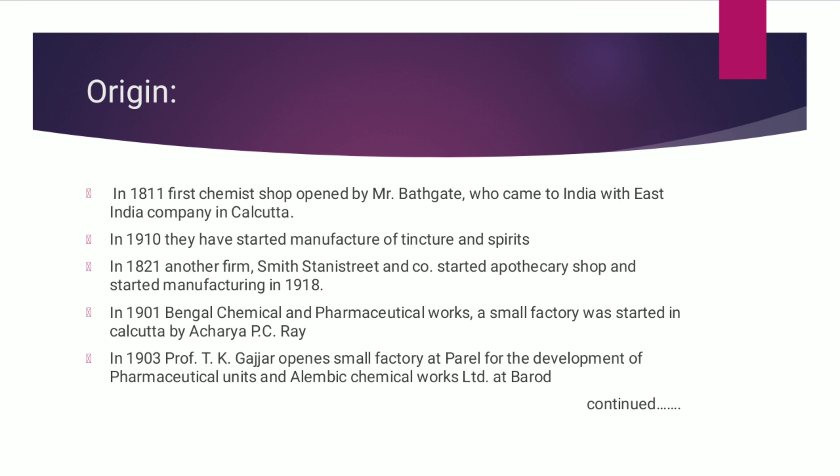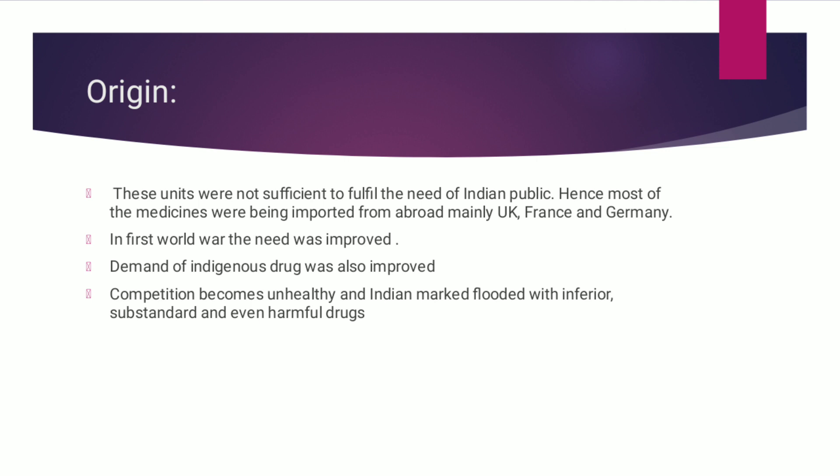In 1903, under the leadership of Professor T.K. Gujar, a small factory at Parel was started which led to the development of other pharmaceutical units, that is Alembic Chemical Works Limited at Baroda. However, these units were not sufficient to fulfill the requirement of the Indian public. In those days, most medicines were imported from abroad, mainly from UK, France, and Germany. The situation changed after the First World War; cheaper drugs were imported from abroad, and there were increasing demands for indigenous drugs. Indian and foreign concerns entered into competition with imported medicines, producing cheaper drugs. As a result, unhealthy competition grew up and the Indian market got flooded with inferior, substandard and even harmful drugs.